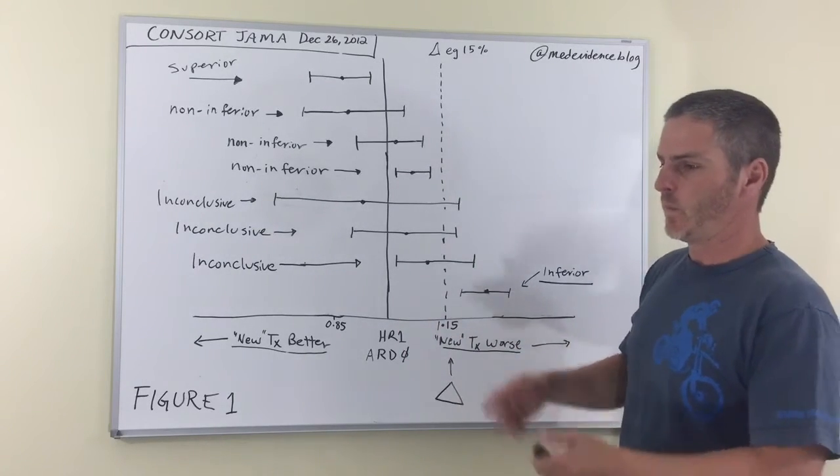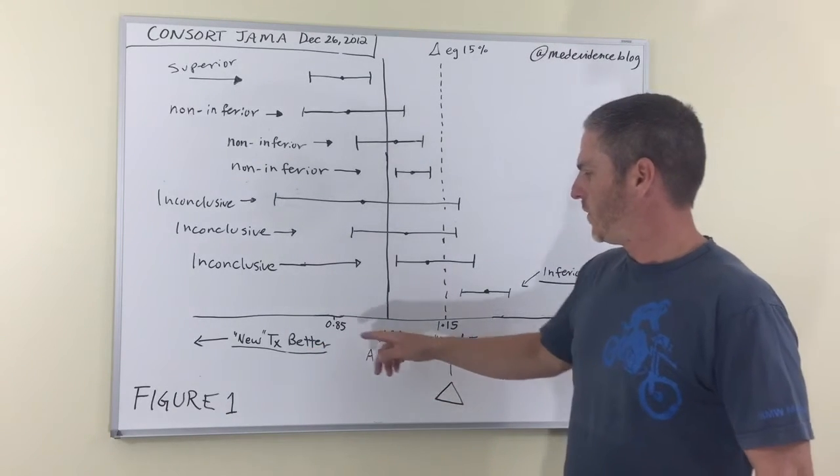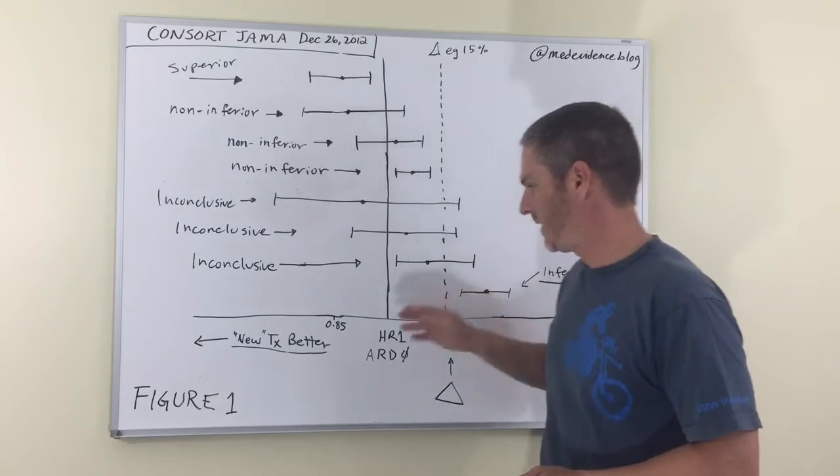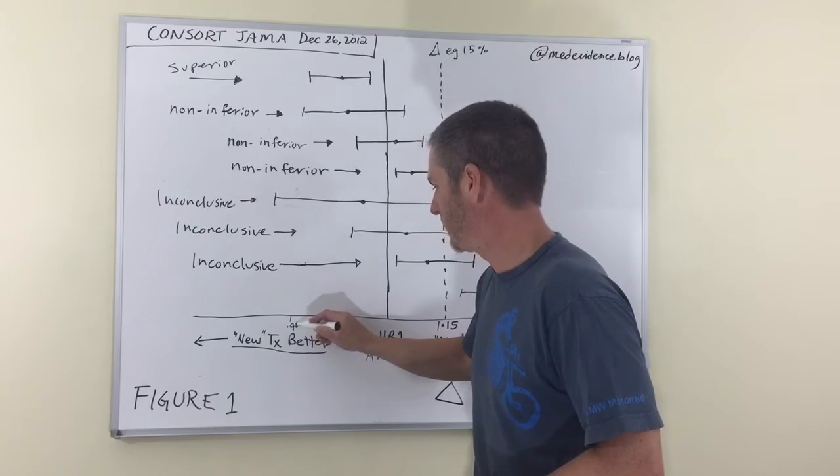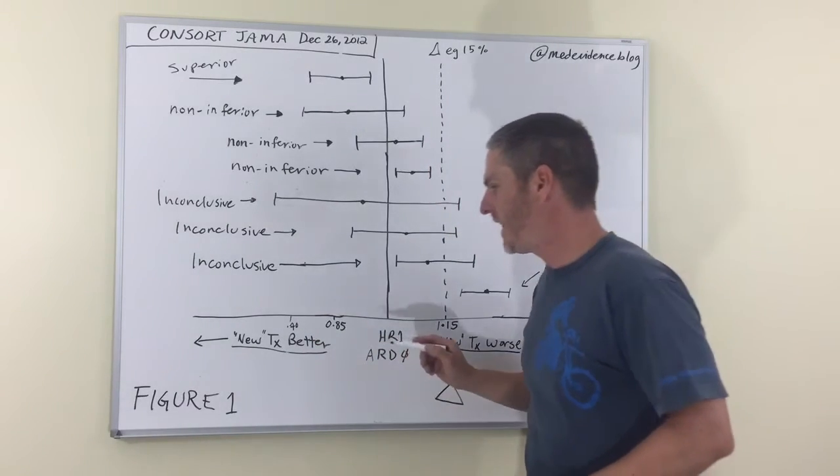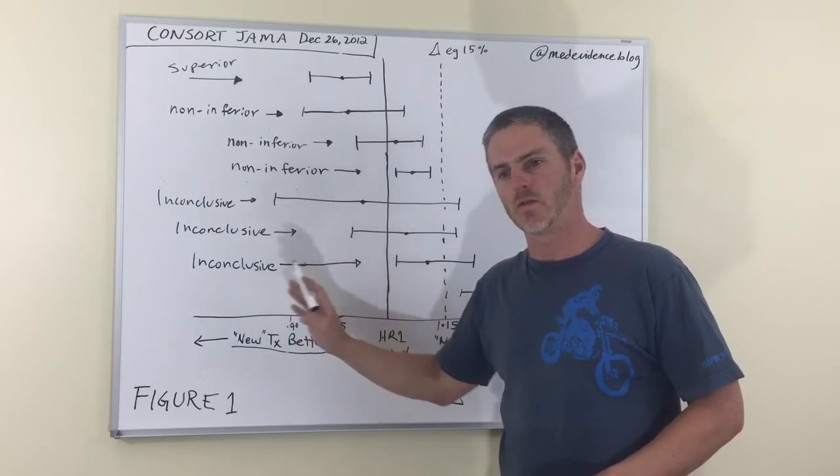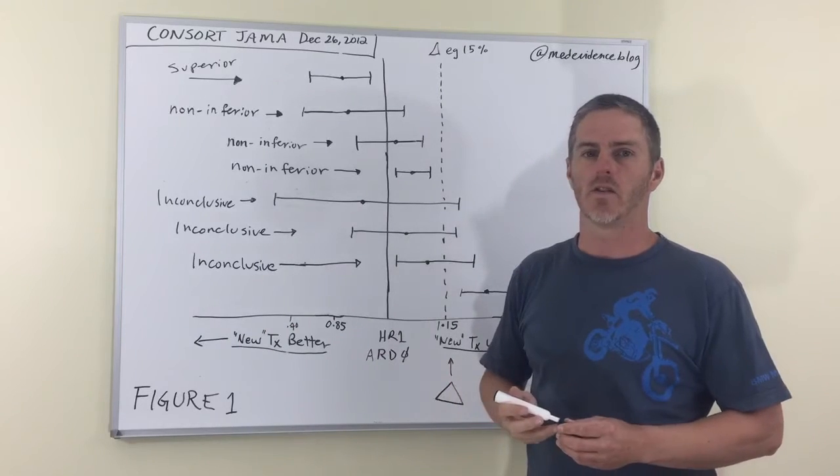So for example, if it was mortality or clotting and the new treatment is better, then the risk of clotting would be 0.85 or 15% reduction in this direction. So then down here, you'd have 0.70, for example. And in that direction, when the point estimate and the 95% confidence intervals fall to the left side of the diagram from your perspective,